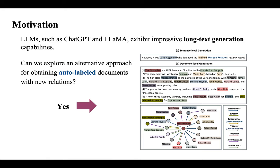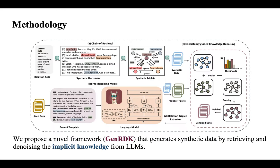Inspired by the impressive long text generation capability of existing large language models such as ChatGPT and LLaMA, we are thinking about if we can explore an alternative approach for obtaining auto-labeled documents with new relations. And the answer is yes.